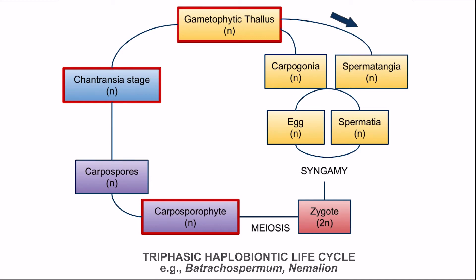The gametophytic thallus, which is a haploid thallus, has oogonia or female gametangia known as carpogonia. In the carpogonia, the female gamete or egg is formed. In the male gametophytic thallus, antheridia or male gametangia are known as spermatangia. In the spermatangia, male gametes or spermatia are formed. Egg and spermatia fuse and after syngamy a diploid zygote is formed. This diploid zygote germinates on the female gametophyte and forms a carposporophyte. But carposporophyte is formed after meiosis, so carposporophyte is haploid. It is parasitic on the female gametophyte.